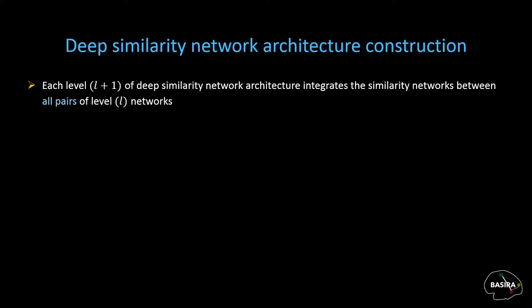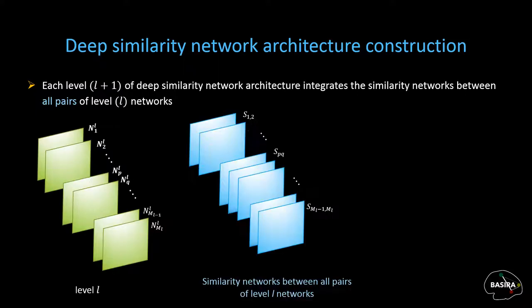We first propose a deep multi-level network architecture where each level integrates the similarity networks between all possible pairs of networks in the previous level. For example, S12 is the similarity network between the two level-L networks N1 and N2, and SPQ is the similarity network between level-L networks NQ and NP.